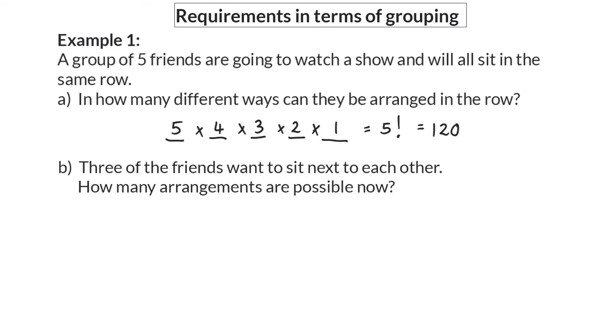Question B: Three of the friends want to sit next to each other. How many arrangements are possible now? So here we are receiving an extra requirement because three of these friends want to sit next to each other. When such a grouping requirement is given the calculation will consist of two parts.